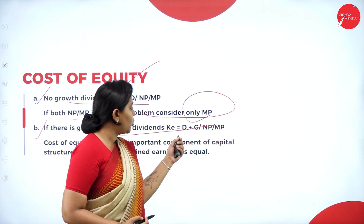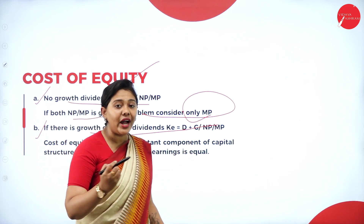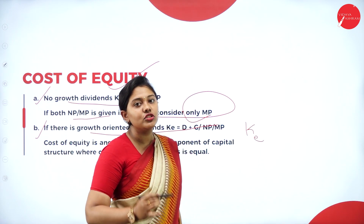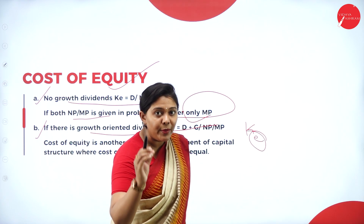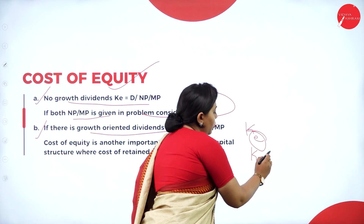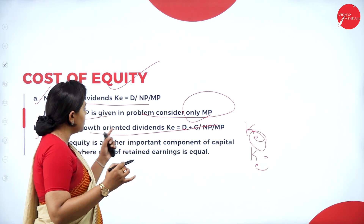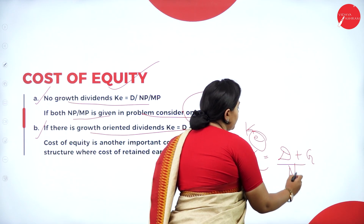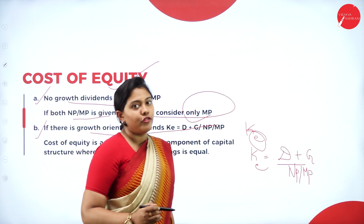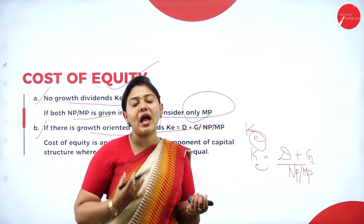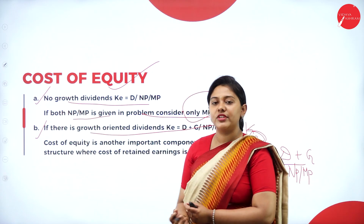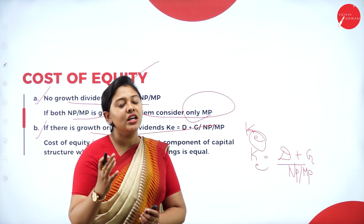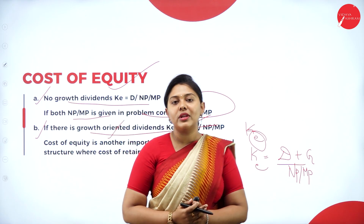If there is a growth-oriented dividend, the formula changes. Cost of Equity = (Dividend + Growth) ÷ Net Proceeds or Market Price. So when there is a growth-oriented dividend, this is the formula. Depending on the situation — no growth oriented dividend or growth oriented dividend — the formula differs. Check out the formula and then substitute it into the problem.